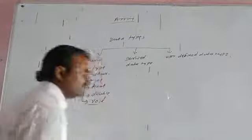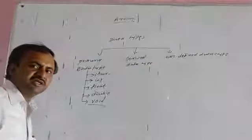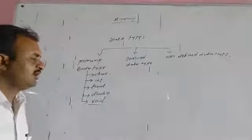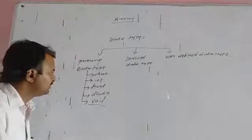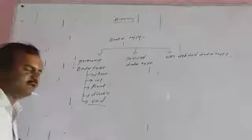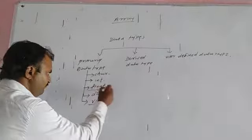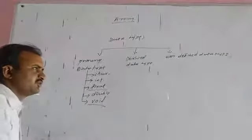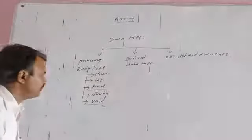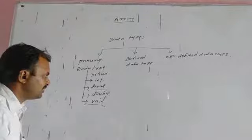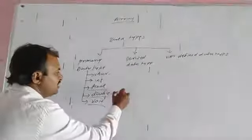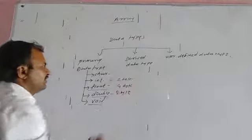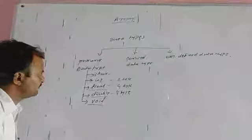The integer data type stores integer values — both positive and negative. The float data type stores real numbers, also called floating point values. If the real numbers are larger than what float can support, we use the double data type, which allocates 8 bytes of memory. Float is 4 bytes and integer is 2 bytes.